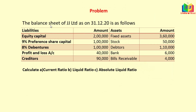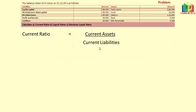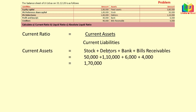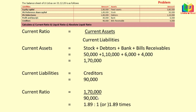Let's see one problem: the balance sheet of JJ Limited as on 31/12/20 is given with liabilities and assets. We have to calculate current ratio, liquid ratio, and absolute liquid ratio. For current ratio (current assets ÷ current liabilities): current assets include stock 50,000, debtors 1,10,000, bank 6,000, and bills receivables 4,000 — totalling 1,70,000. Current liabilities are creditors 90,000. So current ratio = 1,70,000 ÷ 90,000 = 1.89:1 or 1.89 times.